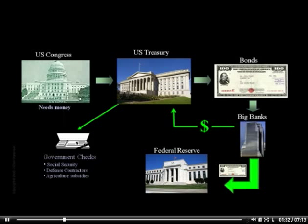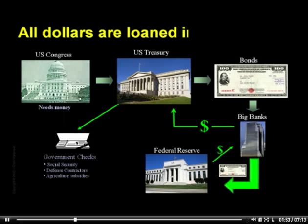When the Fed does this, they simply transfer money in the amount of the bond to the other bank and take possession of the bond — a bond is swapped for money. Where did this money come from? It comes out of thin air, as the Fed creates money when it buys this debt. New Fed money is always exchanged for debt, and so now we can put the title on this page: all dollars are loaned into existence.